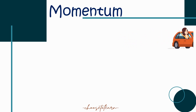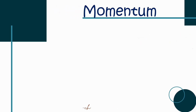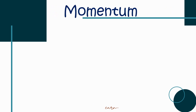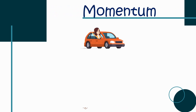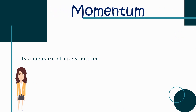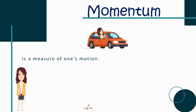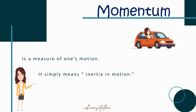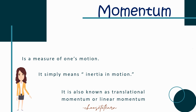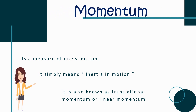What is momentum? When we say momentum, it is a tendency of a moving object to continue moving at a constant velocity. It's a measure of one's motion. In other words, it is inertia in motion. Another term for momentum is translational momentum or linear momentum.